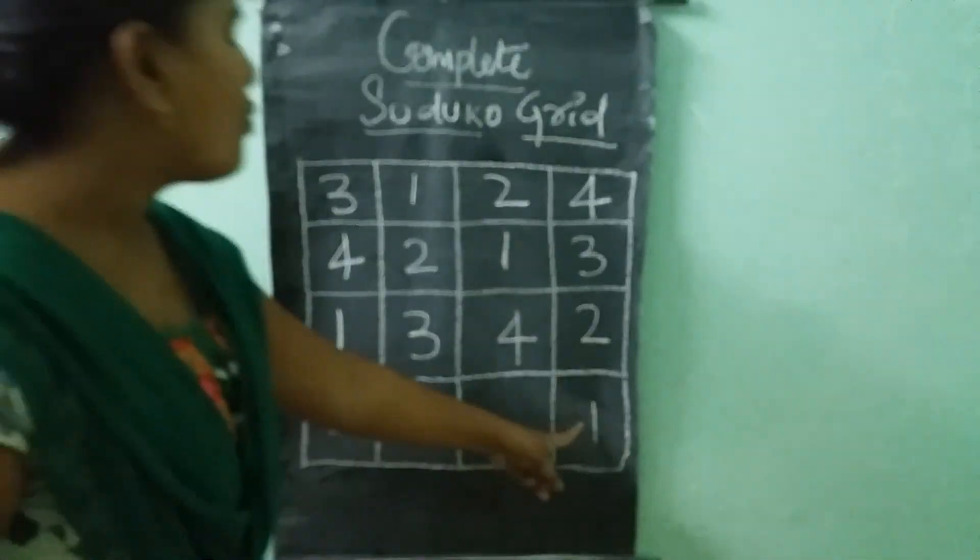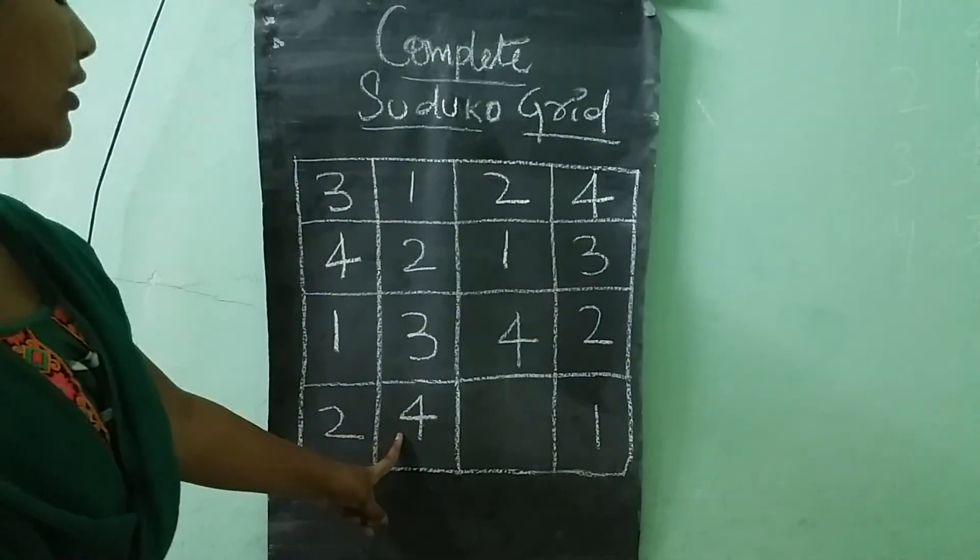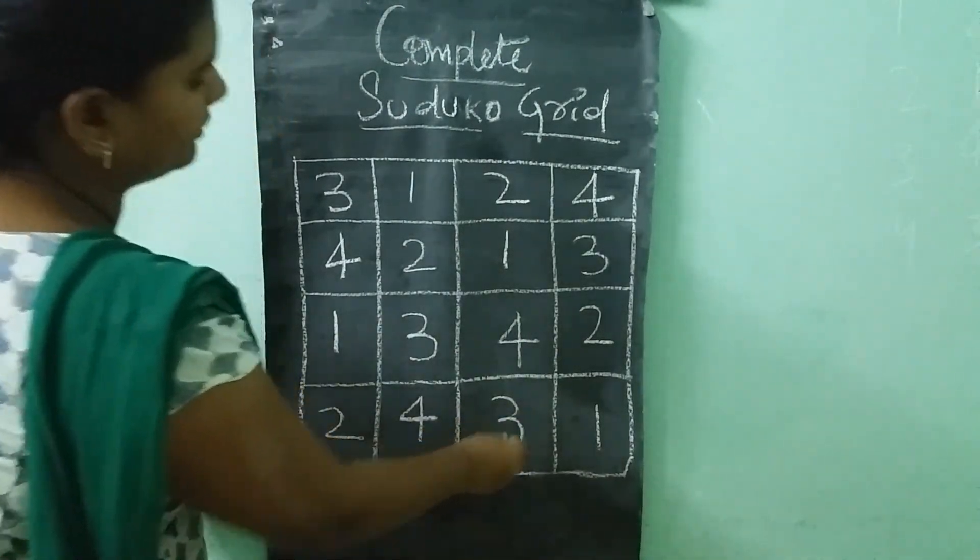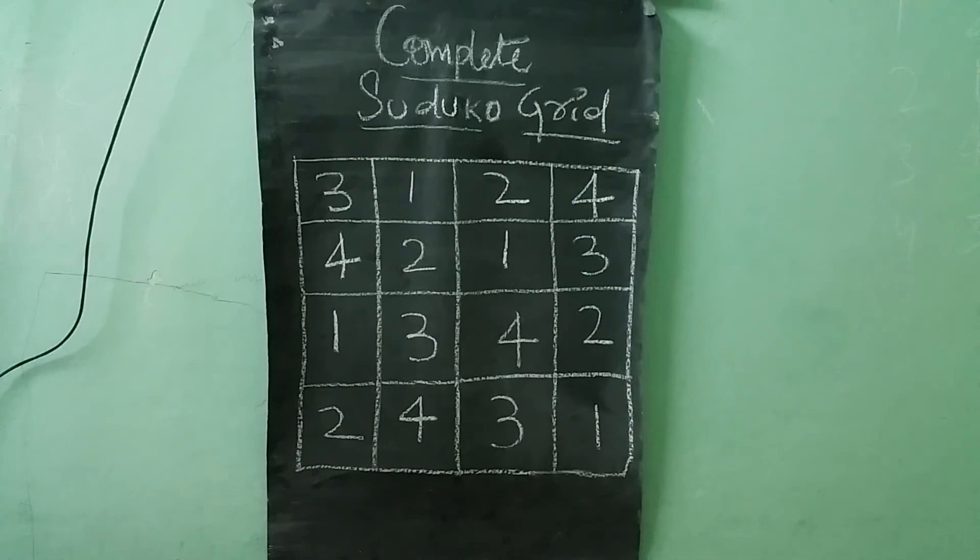Next. Just 1, 2, 8, 4. What is remaining number? 3 is remained. So we need to write 3 here. So this is how we need to solve the Sudoku. With simple and easy tricks. Thank you for watching this video.